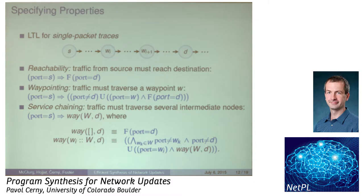Regarding assumptions about switch behavior: we can allow anything here because we're only interested in how a single packet traverses the network, not properties about ordering between different packets from different ingress ports. So we don't need to model time precisely and can treat the network as just a graph with routing.